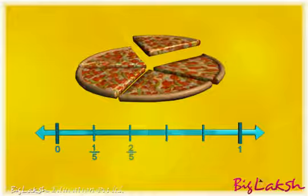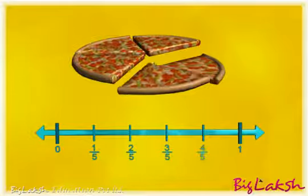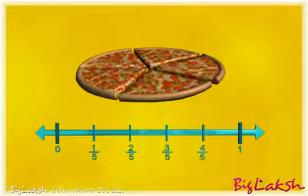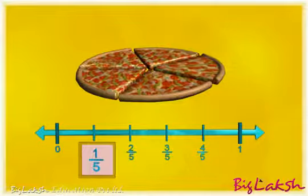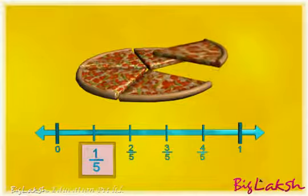Similarly, mark the second division by 2 by 5, the third by 3 by 5 and so on. Now you can see that the first division, that is 1 by 5, represents one piece of the pizza on the number line.